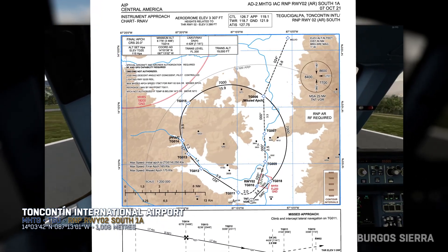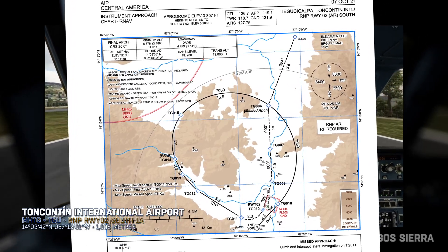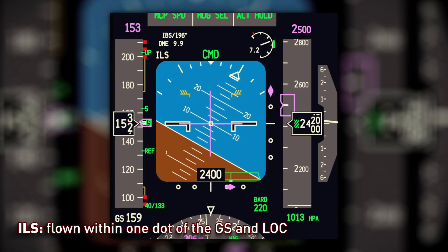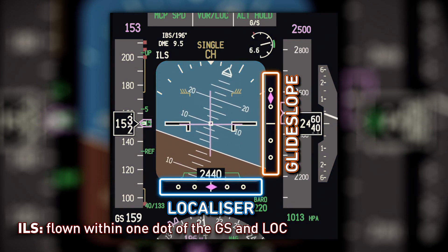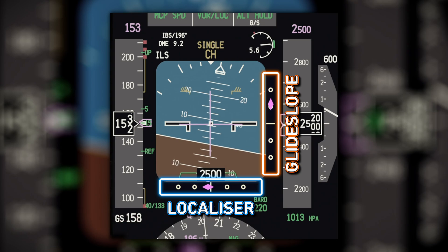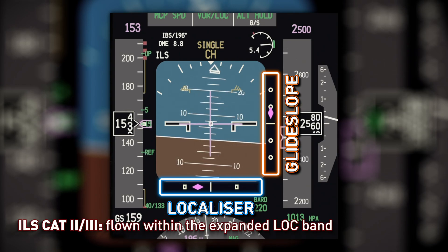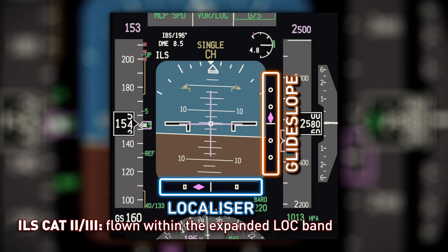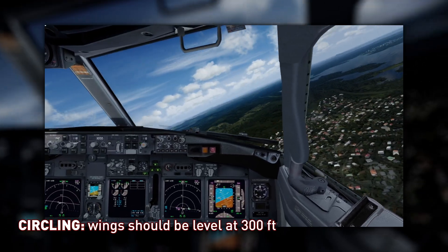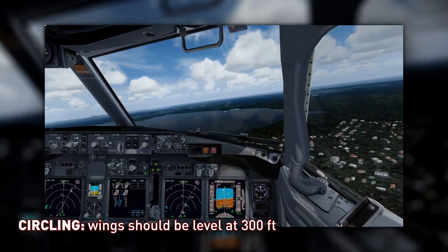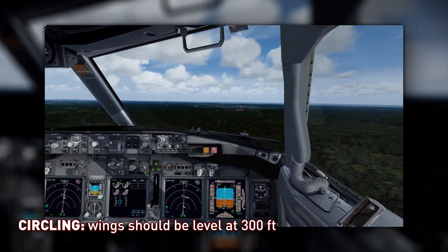Specific types of approaches are stabilised if they also fulfil the following. Instrument landing system ILS approaches must be flown within one dot of the glide slope and localiser. A Category 2 or Category 3 ILS approach must be flown within the expanded localiser band.